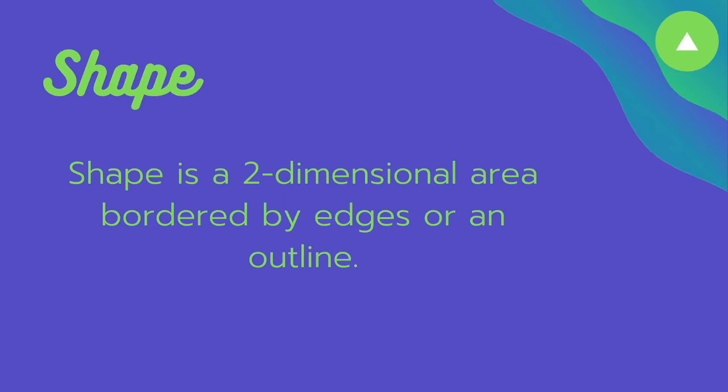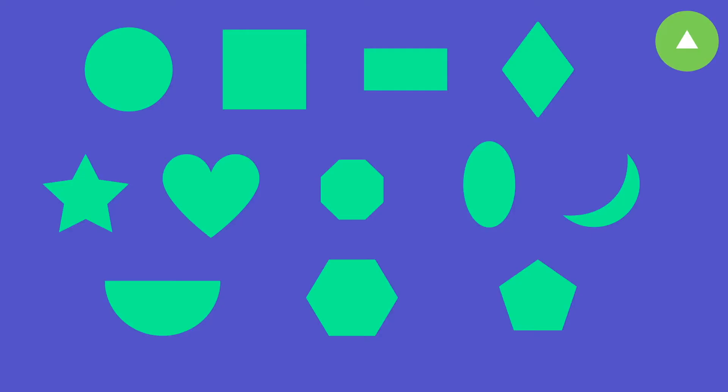These shapes are the same geometric shapes that we learn about in our math lessons: circles, squares, rectangles, ovals, diamonds, a star, pentagon, hexagon, octagon, semicircle, heart, and crescent.